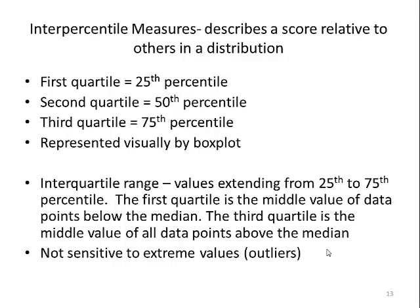Inter-quartile range values extend from the 25th to the 75th percentile. The first quartile is the middle value of data points below the median. The third quartile is the middle value of all data points above the median. This is not sensitive to extreme values because it does show you the outliers and they're computed independently of these outliers.